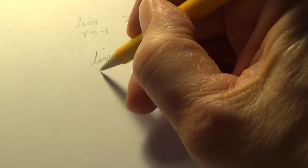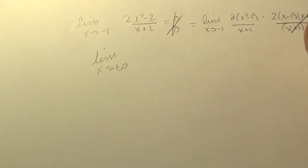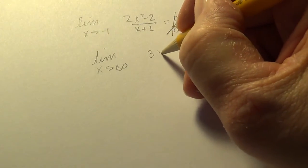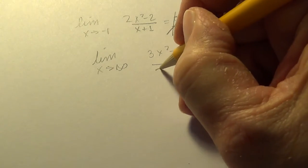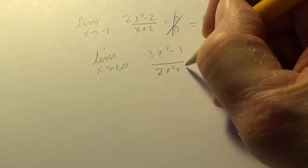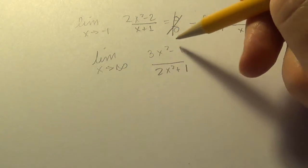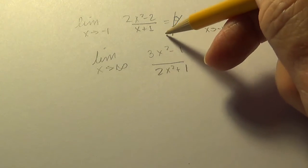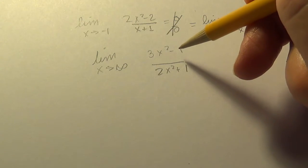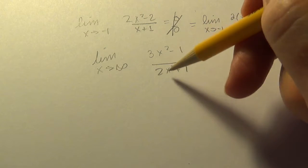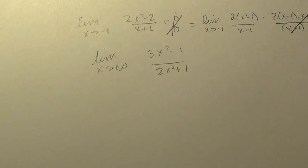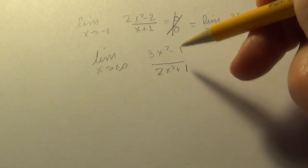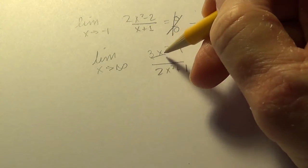So a limit that we couldn't do initially became doable by rearrangement with algebra. And what else did we get fancy with in the past? I know, the limit as x approaches infinity. Suppose we have like 3x squared minus 1 over 2x squared plus 1.